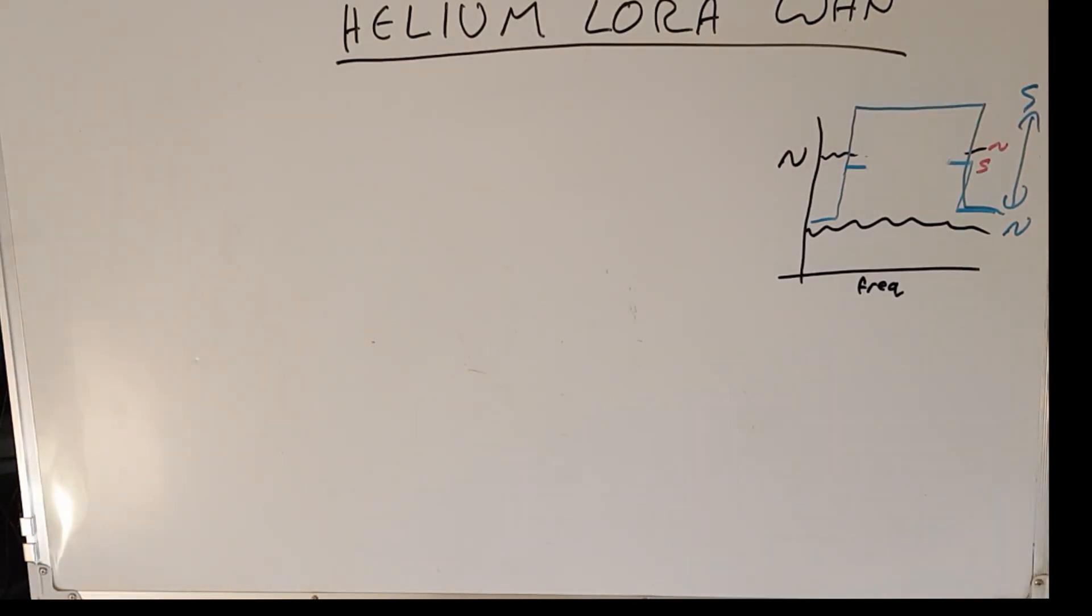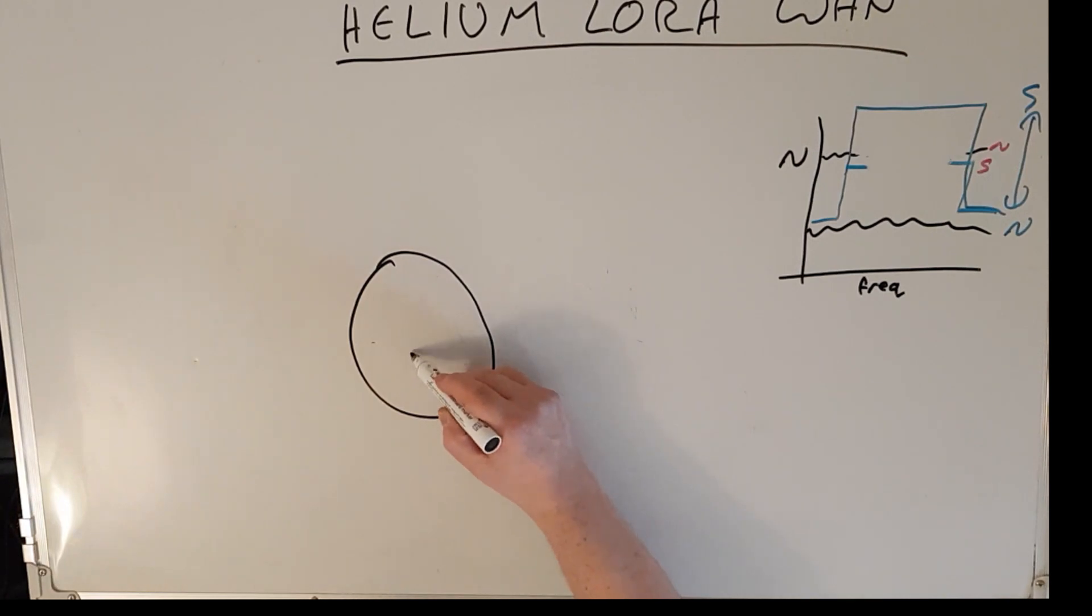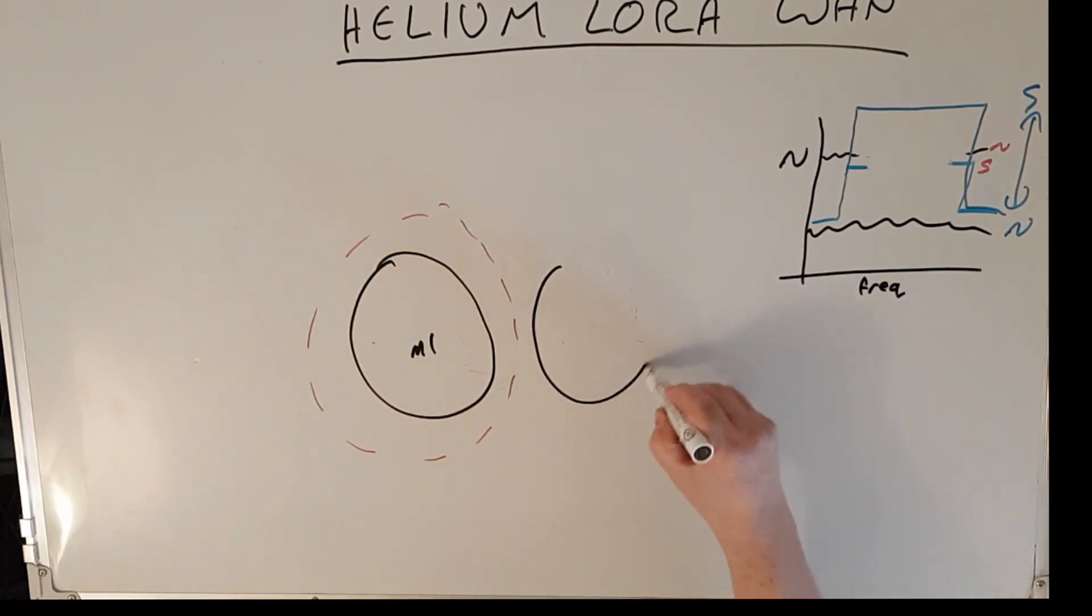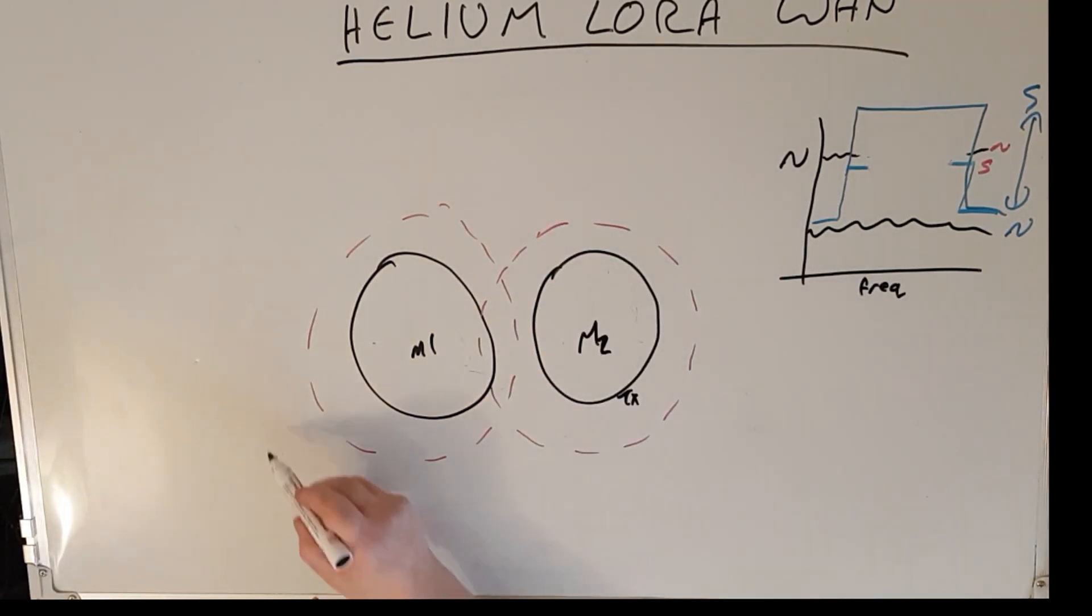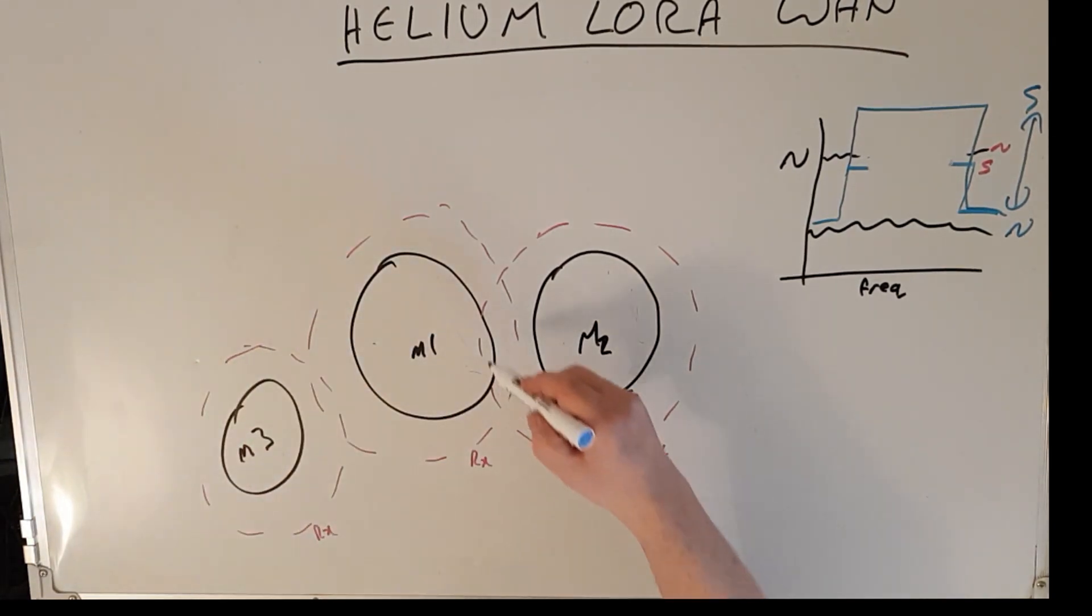So how does this improve our example from before? Well if we have another quick look. We had our transmit or downlink coverage from miner one something like this, and we had our receiving coverage something like this. And then we had miner number two with its transmit coverage something like that, and its receiving coverage something like this. And then we had miner number three with its transmit coverage something like that, and its receive coverage something like this.